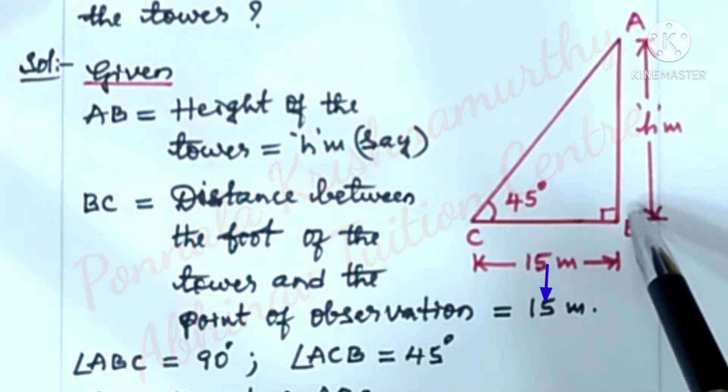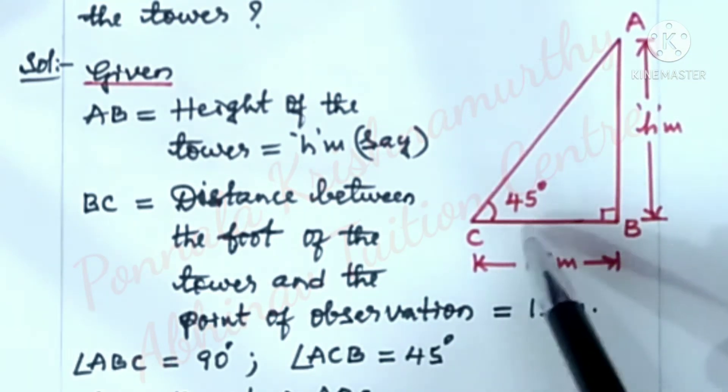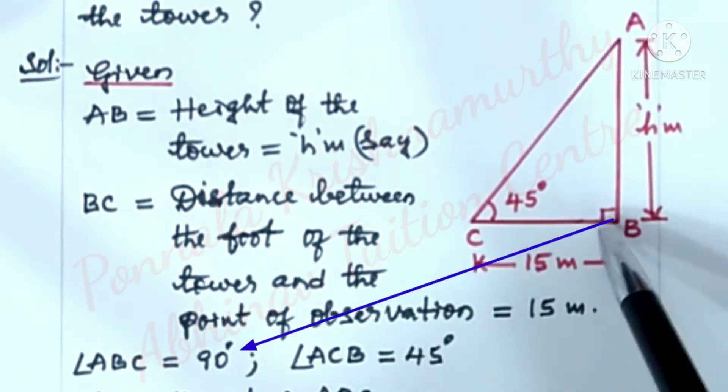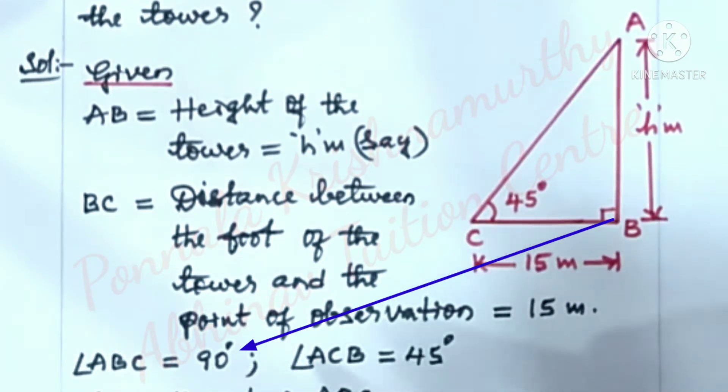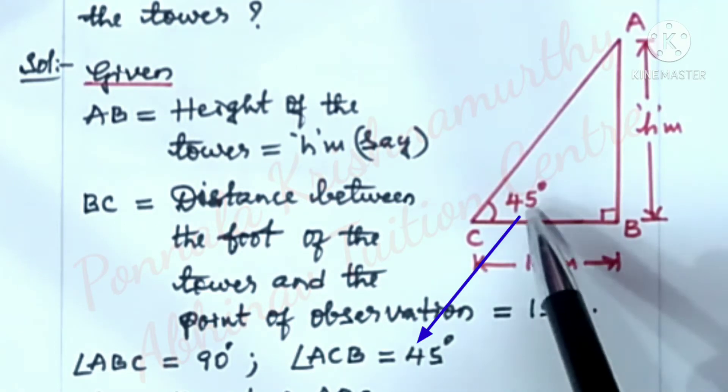Since the tower makes 90 degrees with the ground, angle ABC is equal to 90 degrees, and it is given that angle ACB equal to 45 degrees.